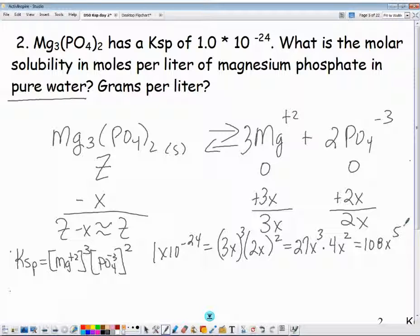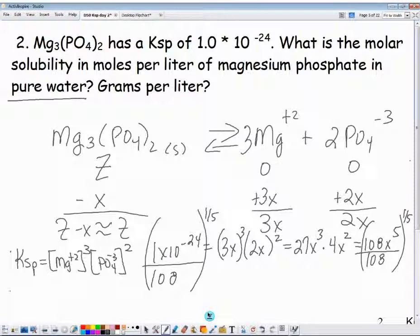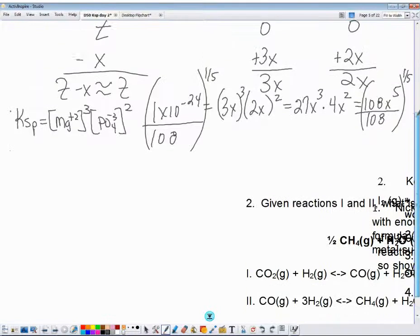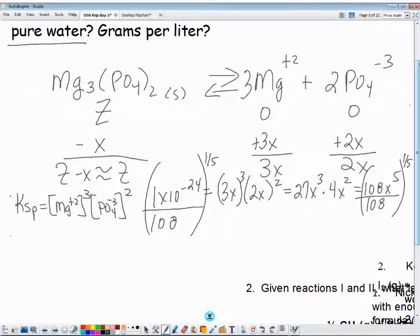So how do I solve? I'll let you use a calculator here. Divide both sides by 108. And then raise both sides to the one-fifth power. That's the same thing as 0.2 power. Raise both sides to the one-fifth power. And we get a value of 6.2 times 10 to the minus 6 when we get our X out. So we get 6.2 times 10 to the minus 6 moles per liter equals my X value.